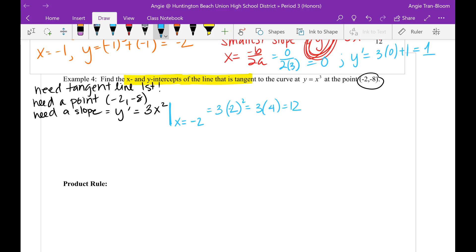I have a slope. Now I can find the equation of a line. So y minus y1 equals m times x minus x1. I know y1 is given to me, y1 was negative 8. I know the slope, we found it: 12. And I know x1 was also given. So this is y plus 8 equals 12x plus 24.